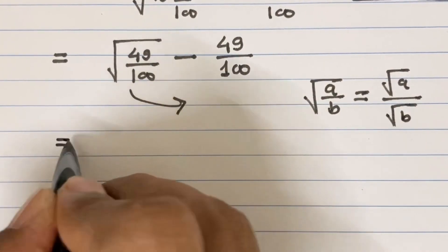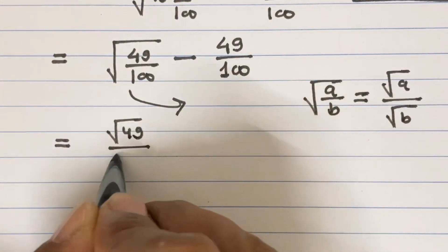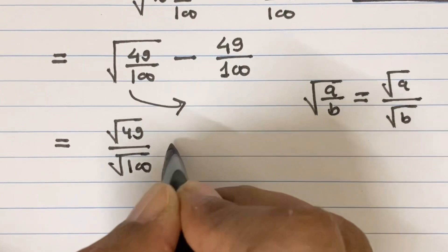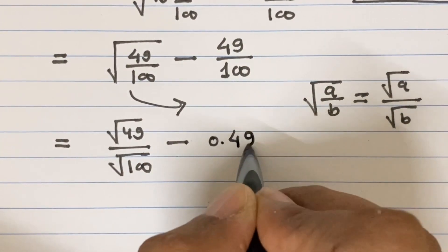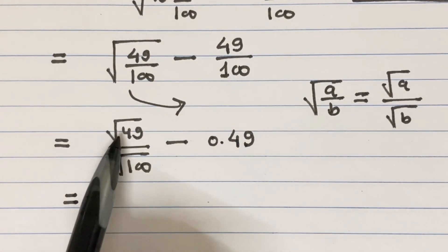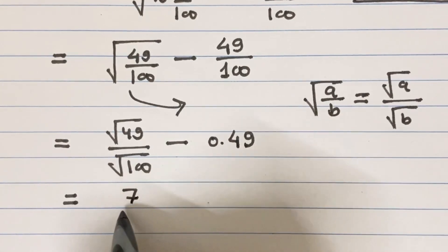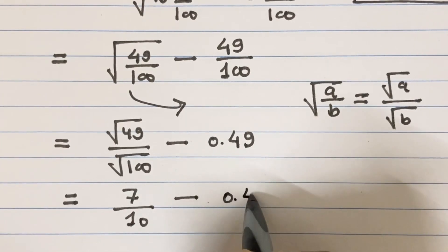So this can be written as square root of 49 divided by square root of 100 minus 49 divided by 100 is 0.49, which equals square root of 49 is 7 divided by square root of 100 is 10 minus 0.49.